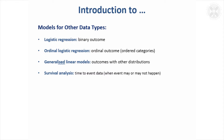Some of the models available for other data types include logistic regression, which is suitable when you've got a binary outcome — a categorical variable that's either one thing or another, something that either happens or it doesn't.